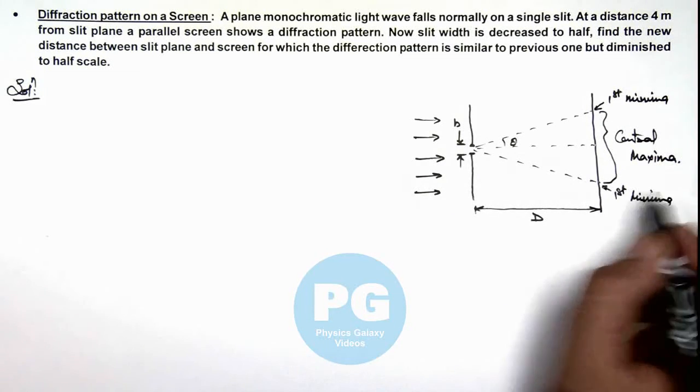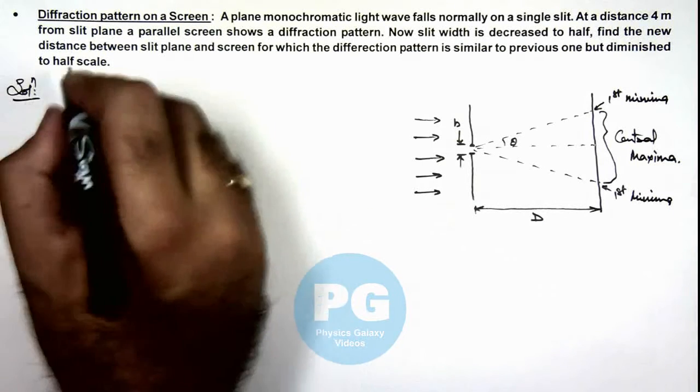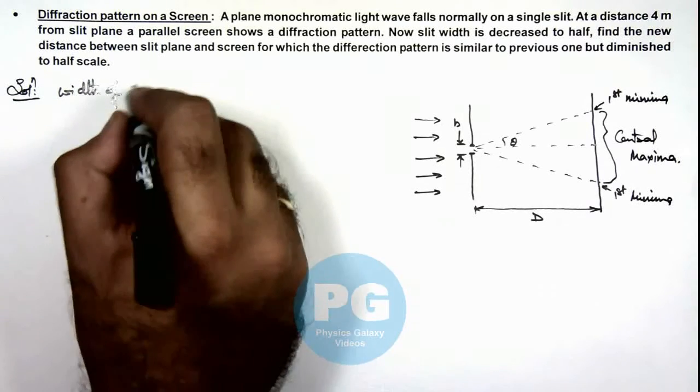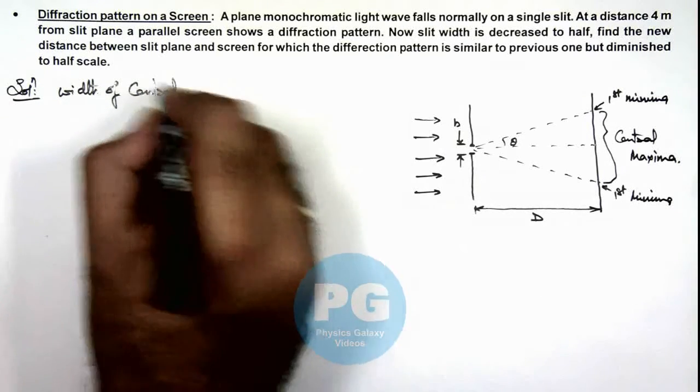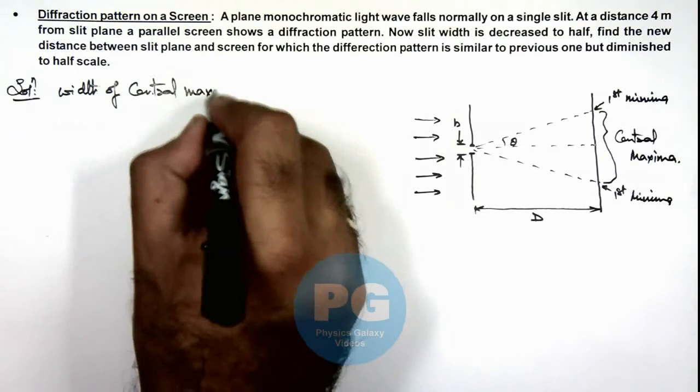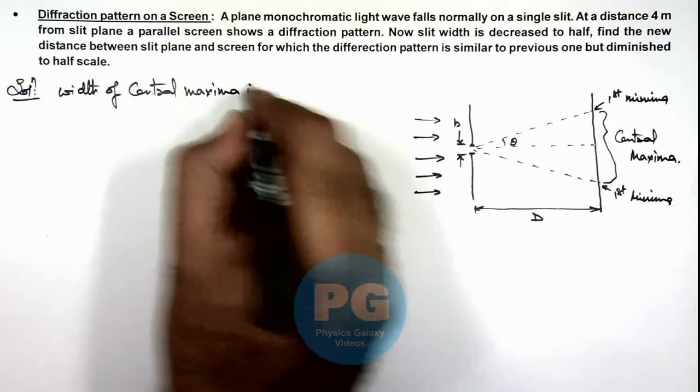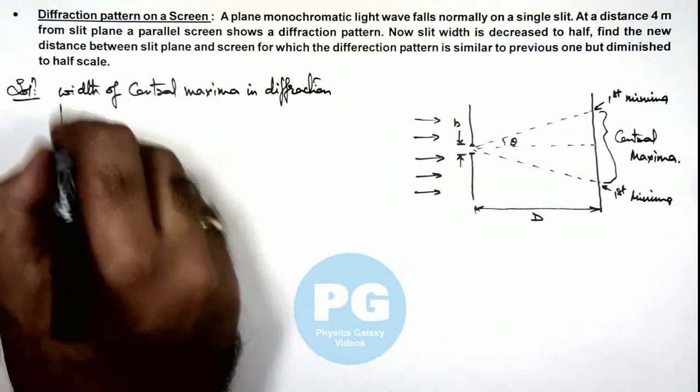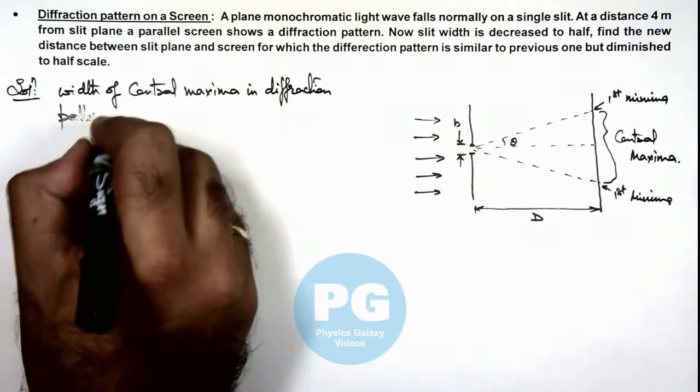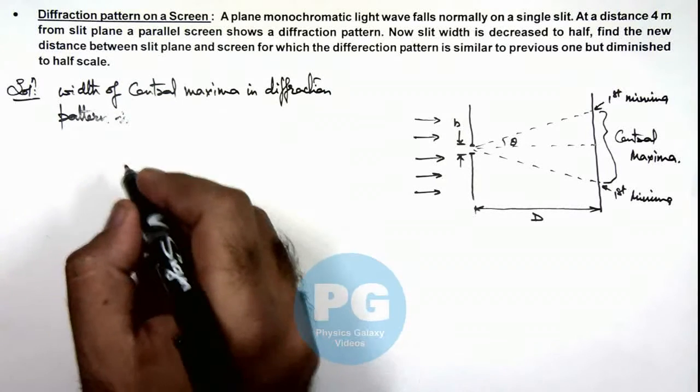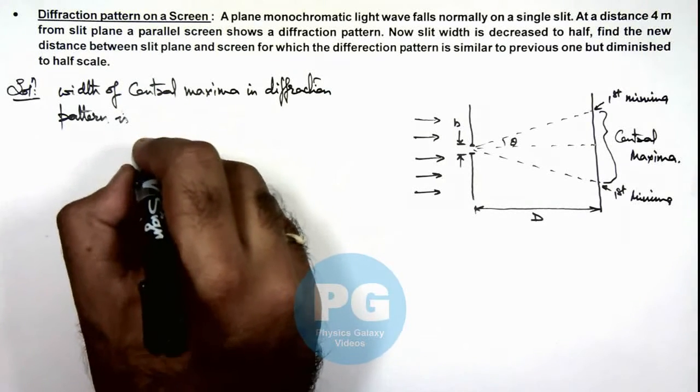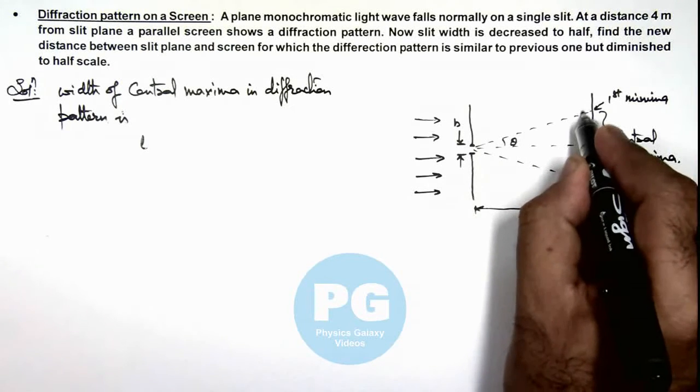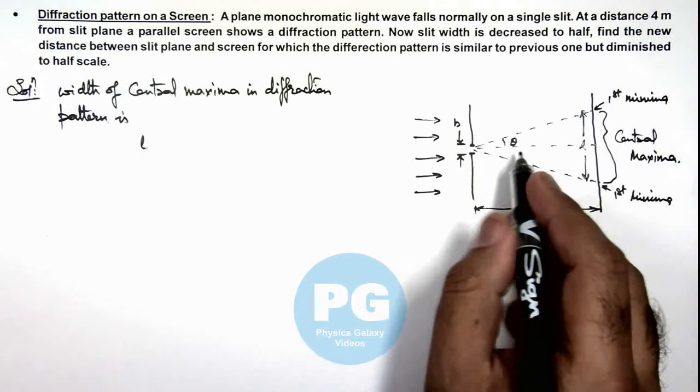And now in this situation we can write the width of central maxima in the diffraction pattern. This width we can write as l. If this distance is l, we can simply write l is equal to twice of d theta, where we consider theta to be a small angle.